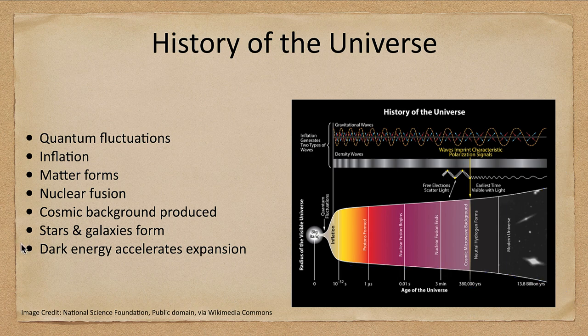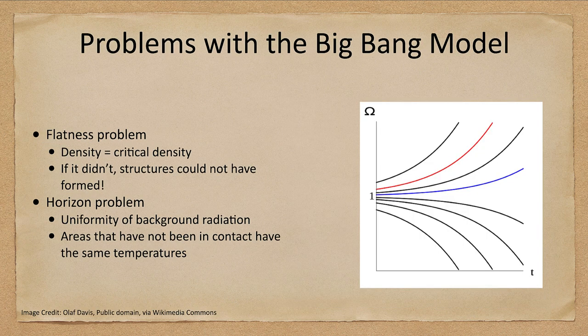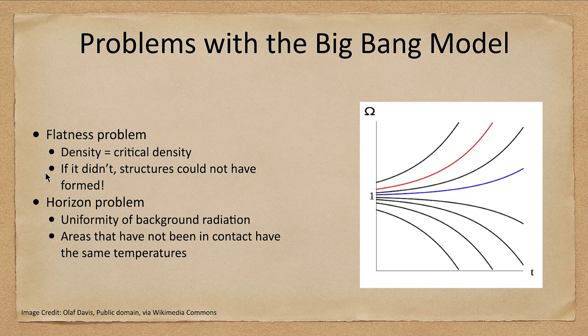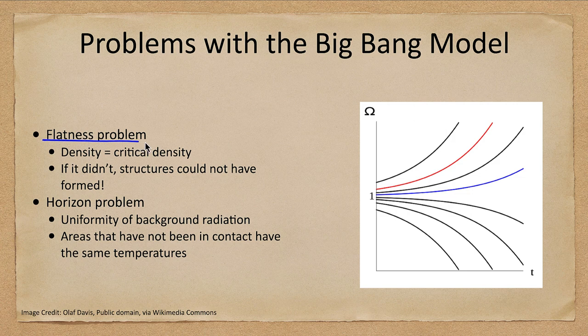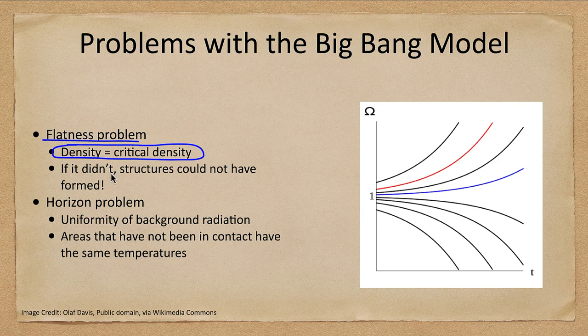With any model, there are going to be problems. So what are some of the problems with the Big Bang model? We're going to look at two of these. One of these is the flatness problem. That is the density equals the critical density. Why does the universe look so flat? If it did not, nothing would have formed.